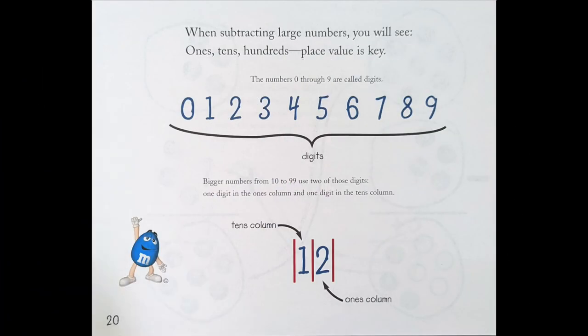When subtracting large numbers, you will see 1's, 10's, 100's. Place value is key. The numbers 0 through 9 are called digits: 0, 1, 2, 3, 4, 5, 6, 7, 8, 9.